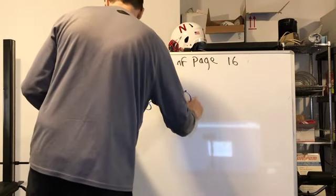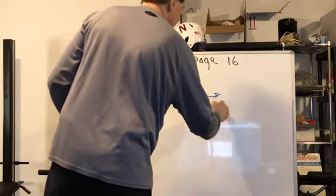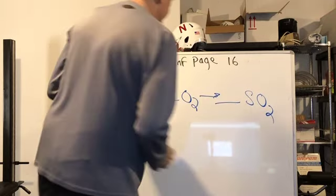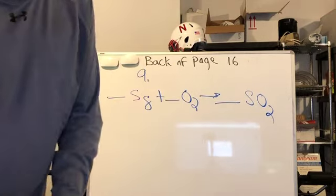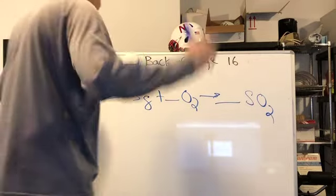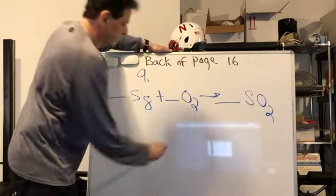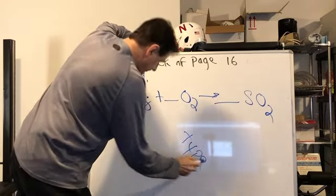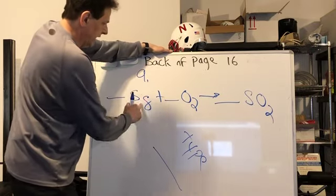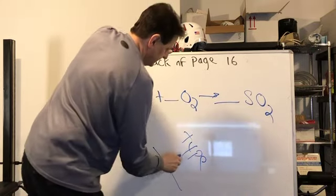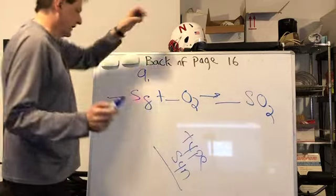Nine. S8 plus O2 makes SO2. Yeah, everything looks even. Just multiples on this one. First up, type. We've got A plus B making AB, which makes it a synthesis reaction.